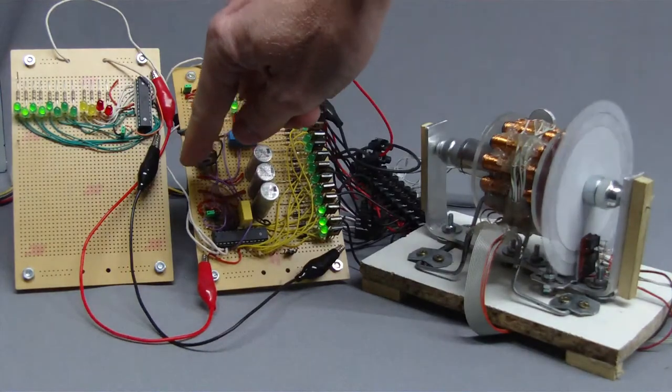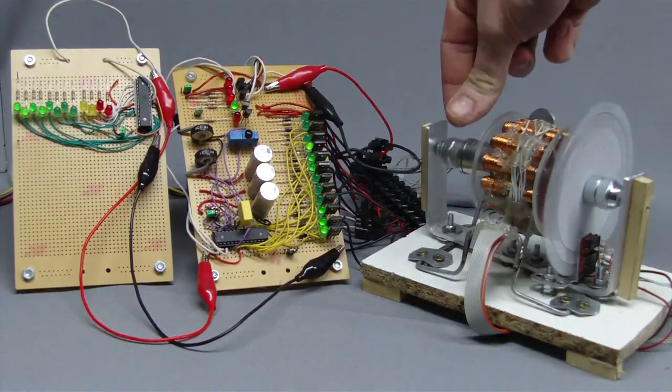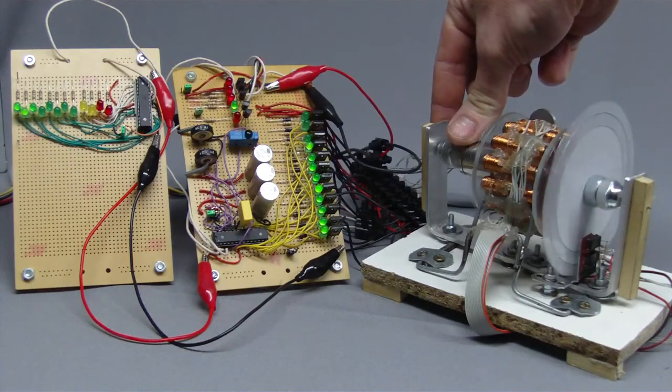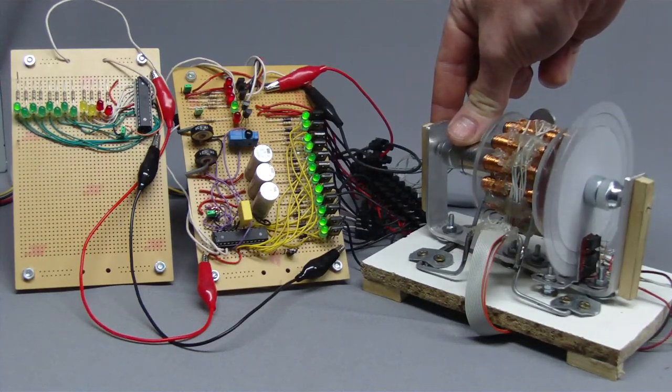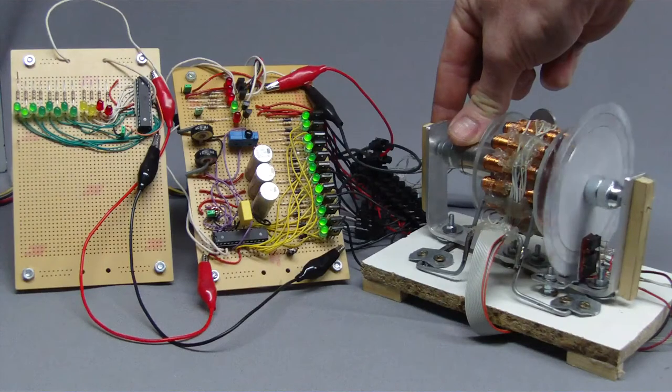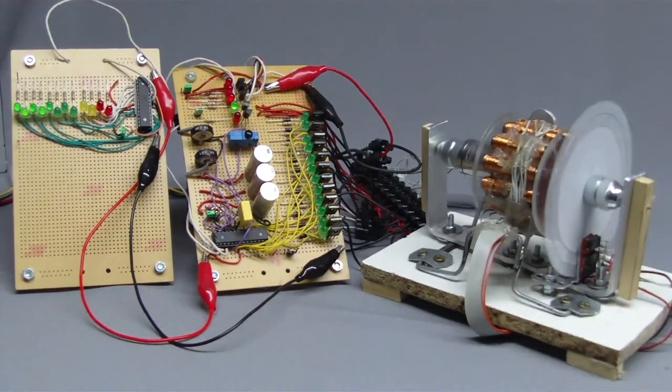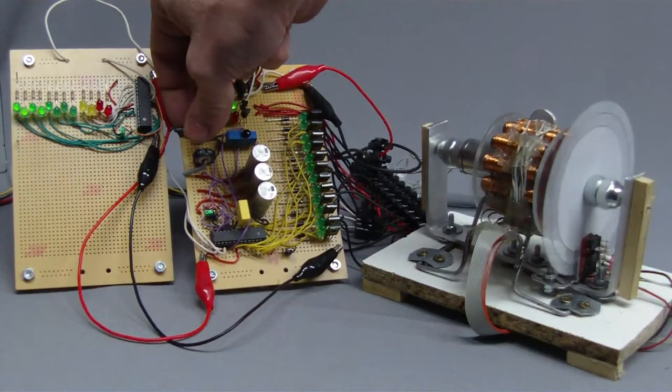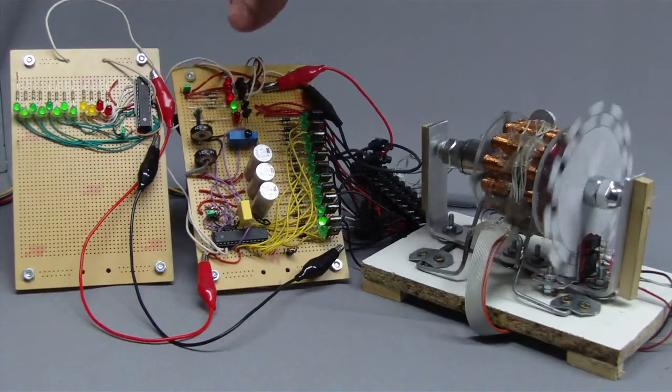The two red LEDs operate as overflow counter. If a motor speed of 500 rounds per minute is reached, those two LEDs count up in binary system and the LED bar starts on the left side again. Thus, revolution speeds up to 2000 rounds per minute can be displayed.